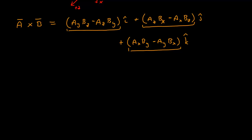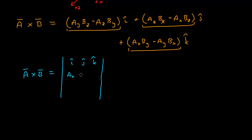There is a very nice shorthand way to write this if you're familiar with matrices and determinants. The cross product is equal to the determinant of a 3-by-3 matrix, where the first row contains the Cartesian unit vectors, the second row contains the components of A (Ax, Ay, Az), and the third row contains the components of B (Bx, By, Bz). If you haven't seen determinants before, this is just a compact way of writing the component formula above.